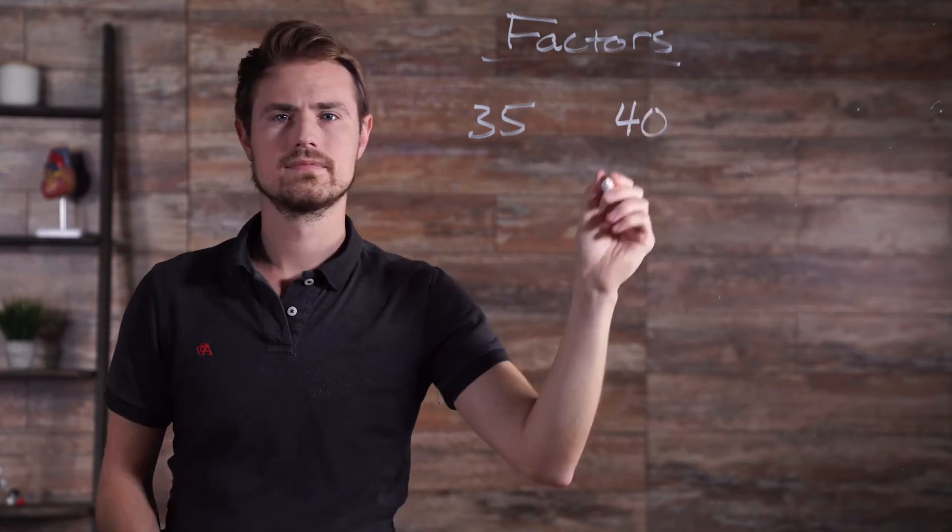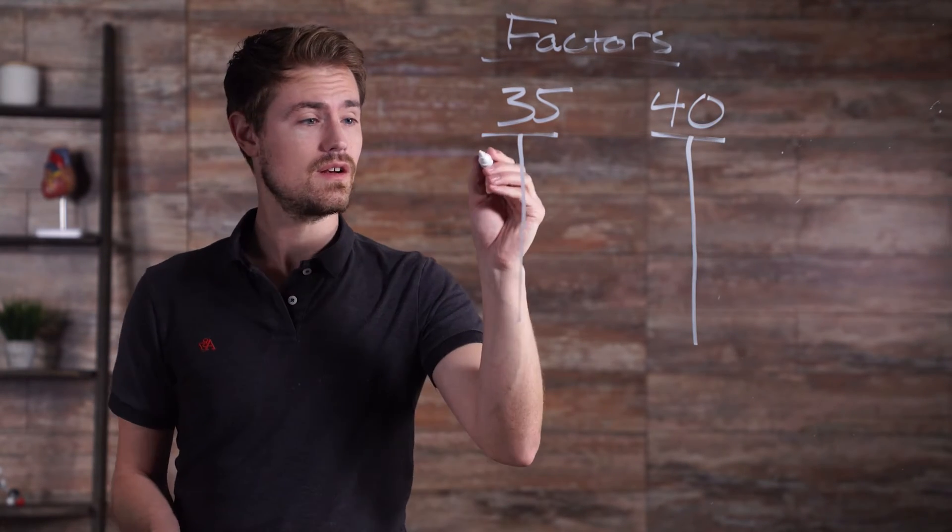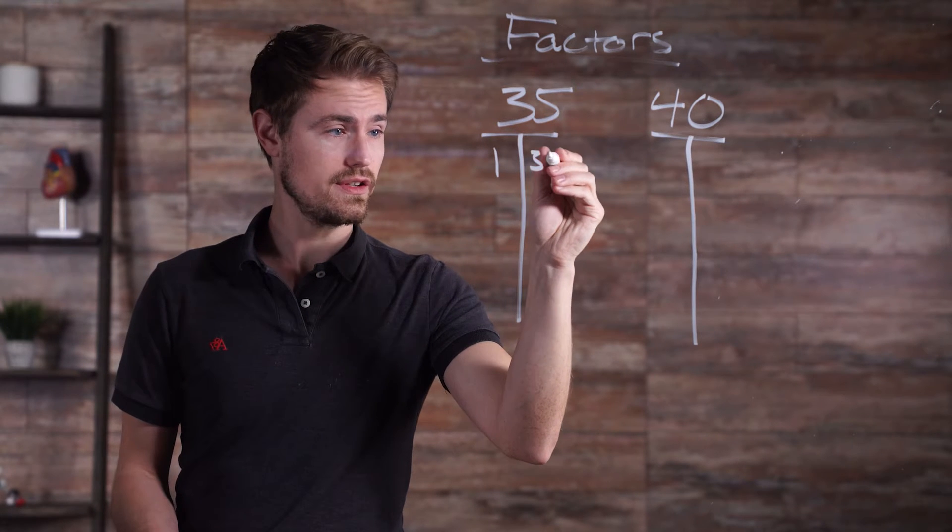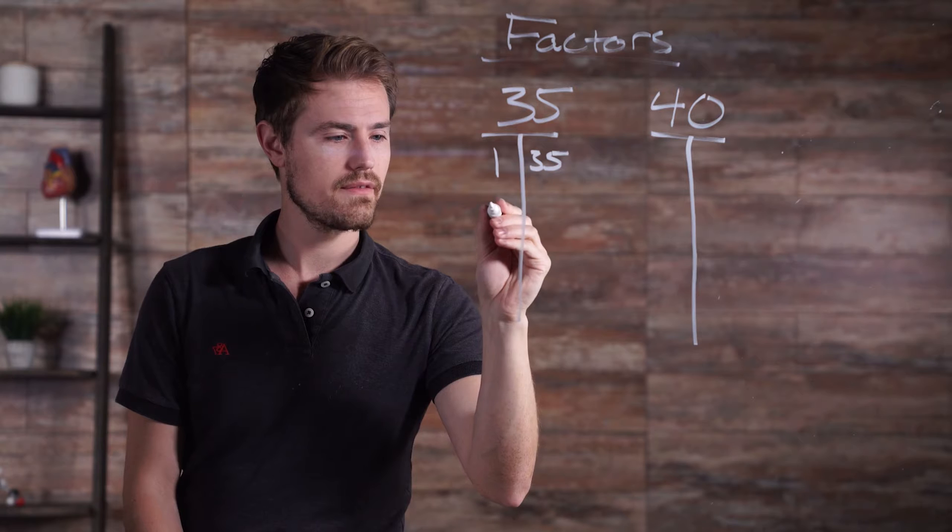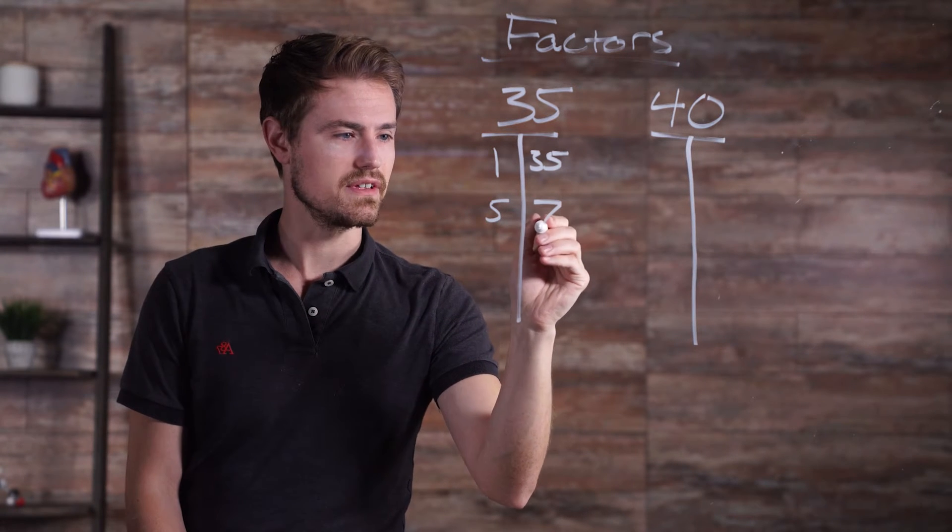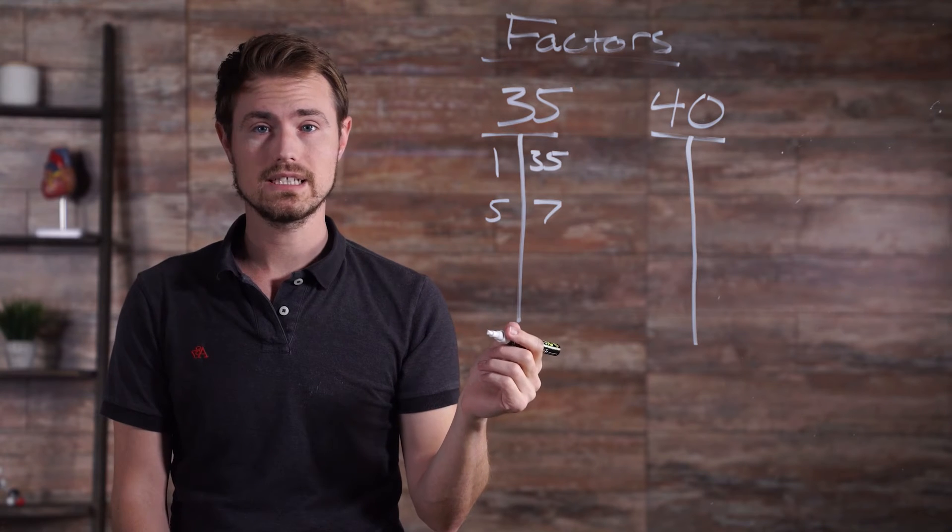Common factors are factors that two numbers share or have in common. For example, let's look at the factors of 35 and 40. For 35, we have 1 and 35, because 1 times 35 is equal to 35. We also have 5 and 7, because 5 times 7 is equal to 35.